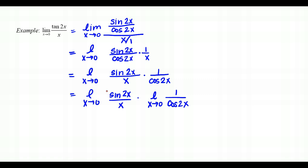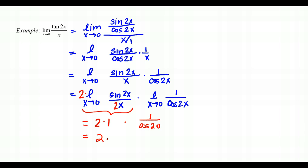The left limit almost matches our trig limit — we just need a 2 in the denominator. Pulling the 2 to the front: 2 times the limit as x approaches 0 of sin(2x)/(2x), which equals 1. So the left side is 2 × 1 = 2. For the right limit, 1/cos(2x) is continuous, so direct substitution gives 1/cos(0) = 1/1 = 1.